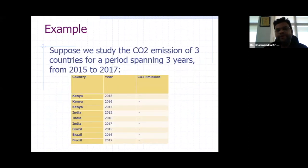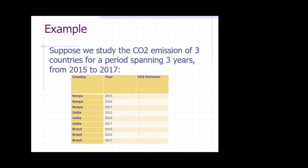Suppose we want to study the CO2 carbon dioxide emission of three countries for a period spanning three years, from 2015 to 2017. There are three countries: Kenya, India, and Brazil. For each country, we have data for three years — 2015, 2016, and 2017. For Kenya, there is data from 2015, 2016, and 2017. Similarly for India, and similarly for Brazil. This type of data is panel data.